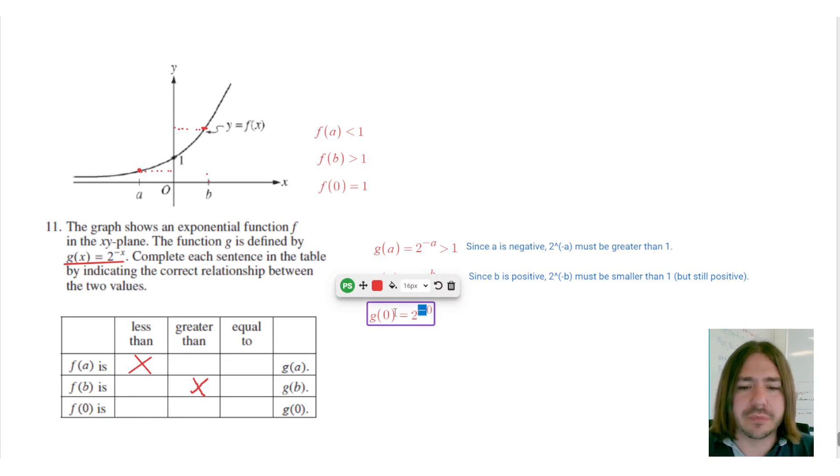Now, negative 0 is just the same 0. So 2 to the 0 is equal to anything to the 0th power, which is 1. Okay, so this is 1, this is 1, so these are equal.